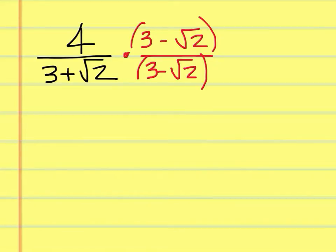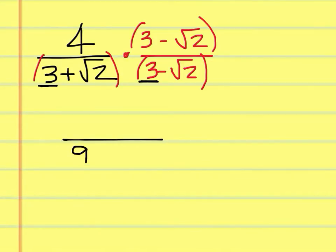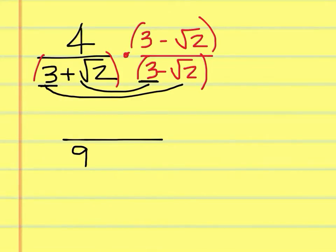So now you have to actually multiply this out. This is like a difference of two squares when you get the result. First, you're going to have 3 times 3, which gives you 9. But you alternate signs, so there's no middle term — 3 times negative square root of 2 and square root of 2 times positive 3 just cancel out. You're left with the square root of 2 times the square root of 2, which is simply 2.